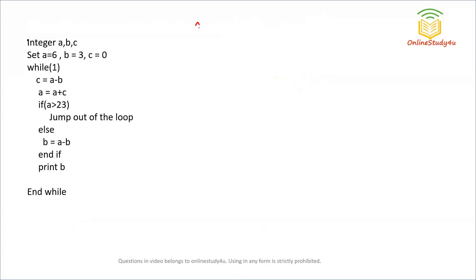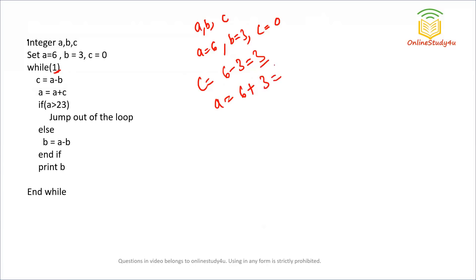Next pseudo code: integers A=6, B=3, C=0. We have while(1) meaning the loop condition is always true. First iteration: C = A − B = 6 − 3 = 3. A = A + C = 6 + 3 = 9. Check if A > 23: 9 > 23 is false, so else executes: B = A − B = 9 − 3 = 6. Then B is printed: 6 is printed.